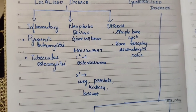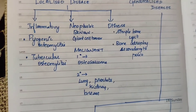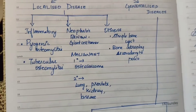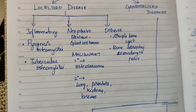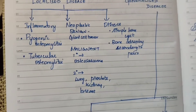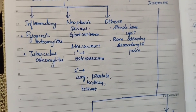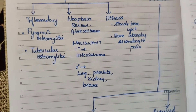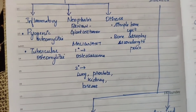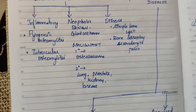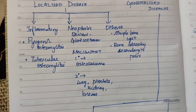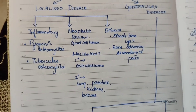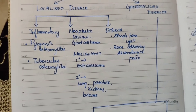Neoplastic includes benign tumors such as giant cell tumor, and malignant tumors such as osteosarcoma (primary). Secondary malignancy can spread from lungs, prostate, kidney, and breast to bone, making it weak. Others include simple bone cysts, bone atrophy secondary to polio — in each case the bone is weakened and fracture may result.